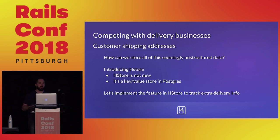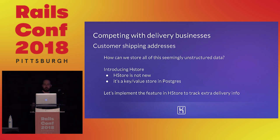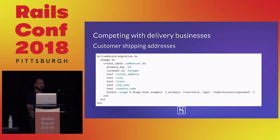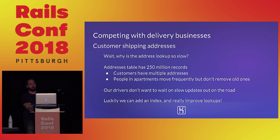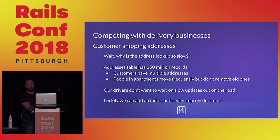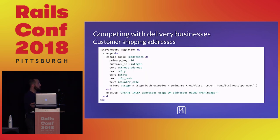We can store this unstructured data in Postgres — HStore already exists today. It's a key-value store, and implementing it seems straightforward. But those address lookups are really slow, and when somebody tries to make an update, drivers aren't going to get it in real time. We could add an index to improve lookups — let's add a hash index on usage and hope for the best. But show of hands — anyone seen this error message before? Hash indexes aren't really well supported in Postgres 9.x for a lot of reasons, the key one being replication is not supported.